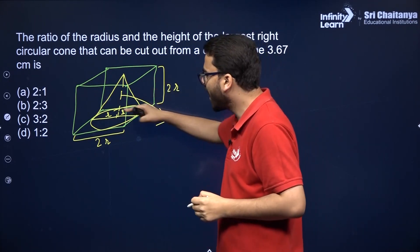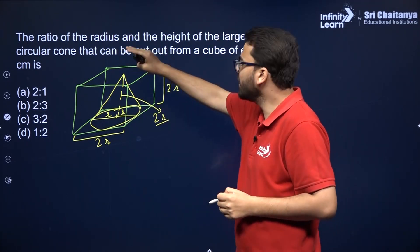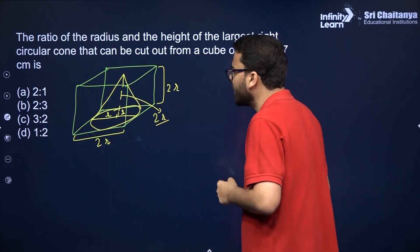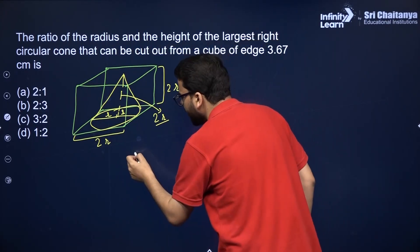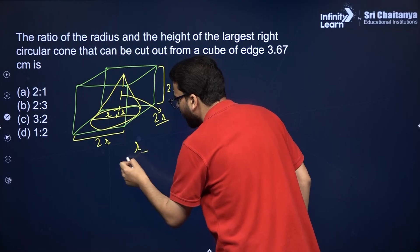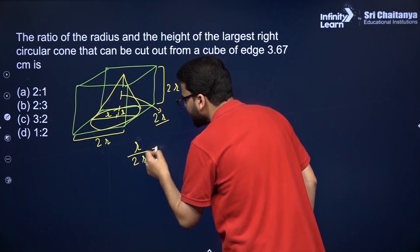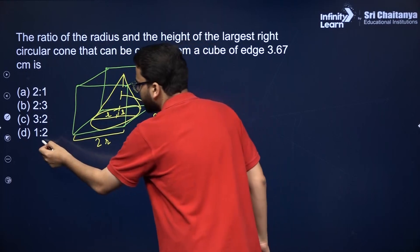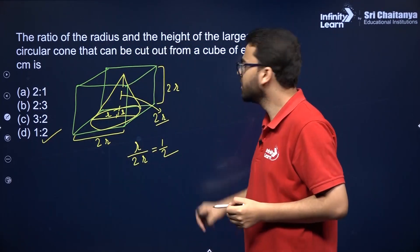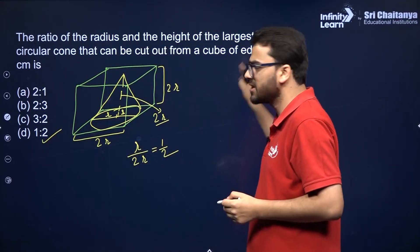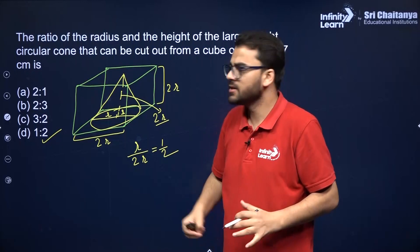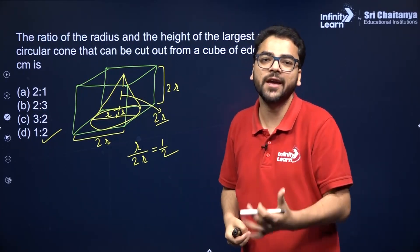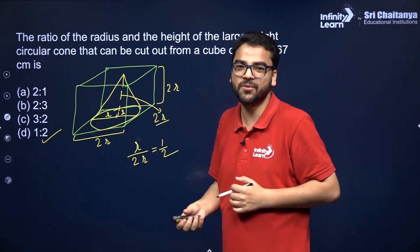So height is 2R and radius is R. You have to find the ratio of the radius to the height, which is R upon 2R. So the answer is 1 is to 2. This value of the edge is just given to confuse you — the ratio is irrespective of the length of the edge of the cube. Let's take the next question.